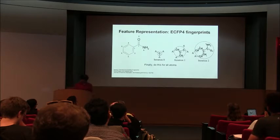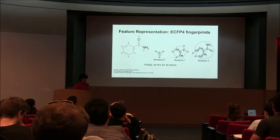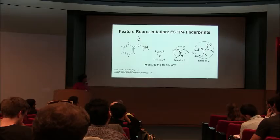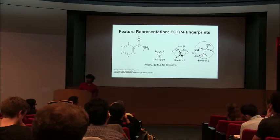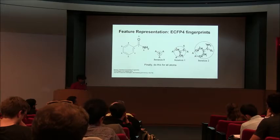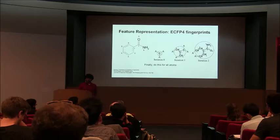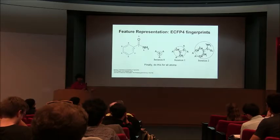The place we started from was very classical cheminformatics. We said, let's represent these compounds using Morgan fingerprints, or extended connectivity fingerprints as they're known in the literature. It's a simple way of encoding a molecule as a binary bit vector. For anybody who's done a little natural language processing, this is analogous to the bag-of-words model. Here it's more like a bag of fragments — we say a molecule is made up of a bag of local fragments representing the functional subgroups.